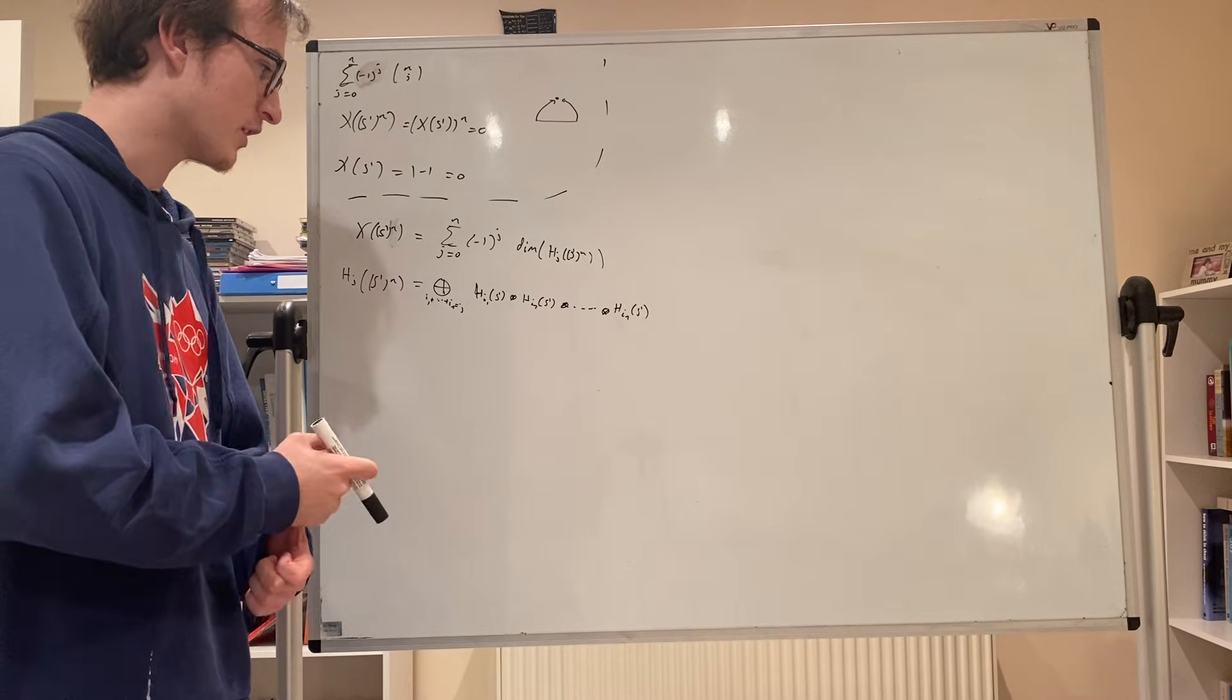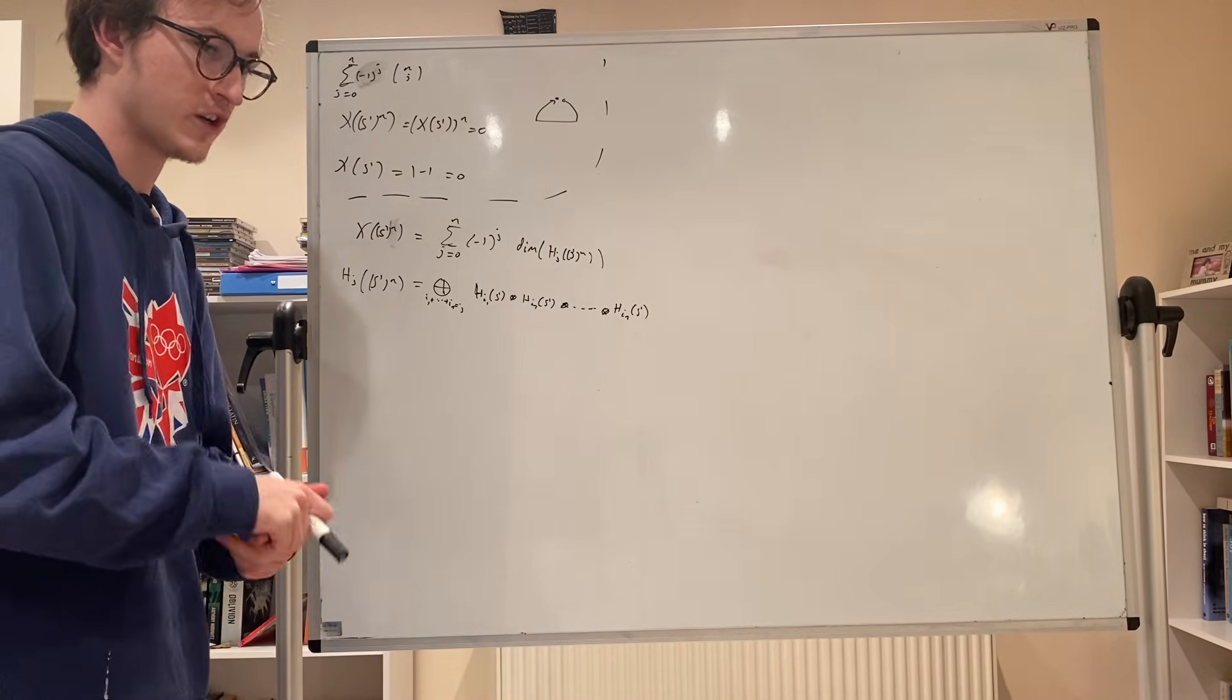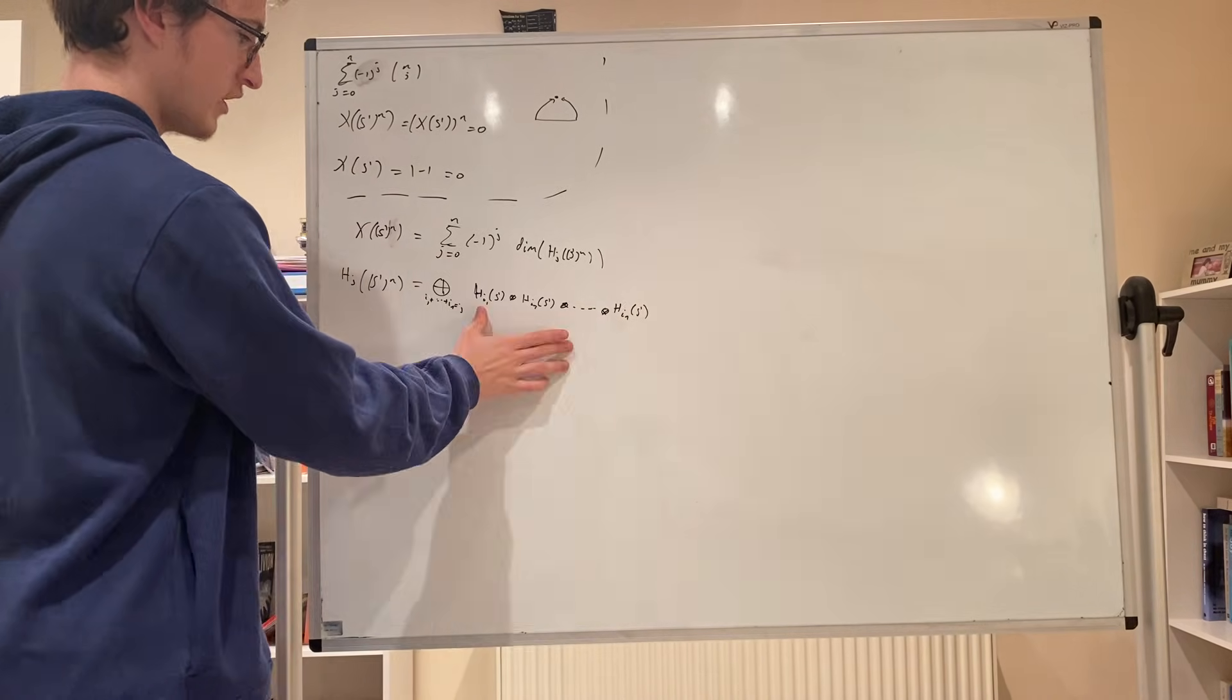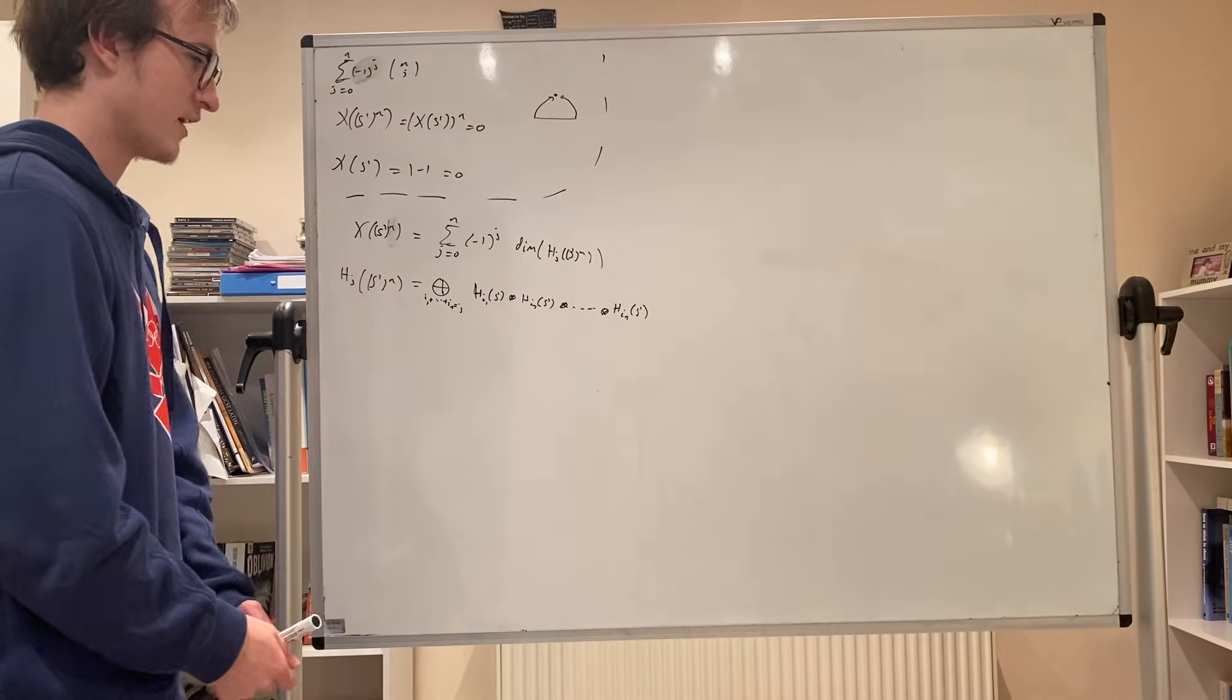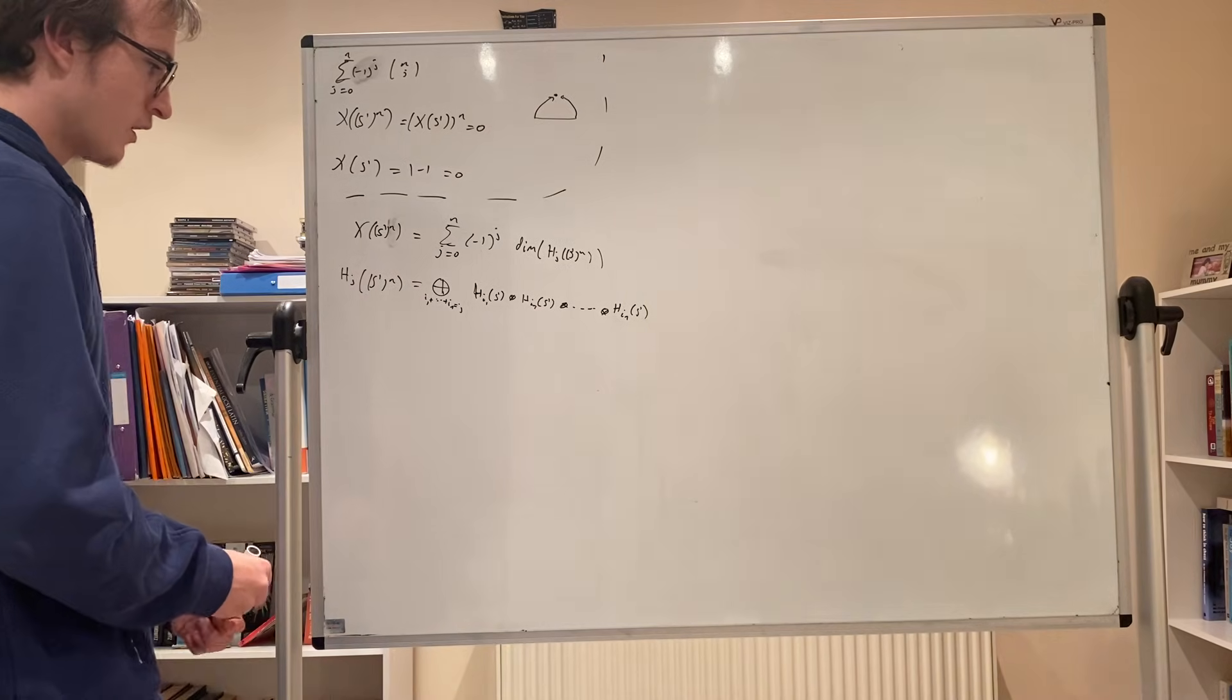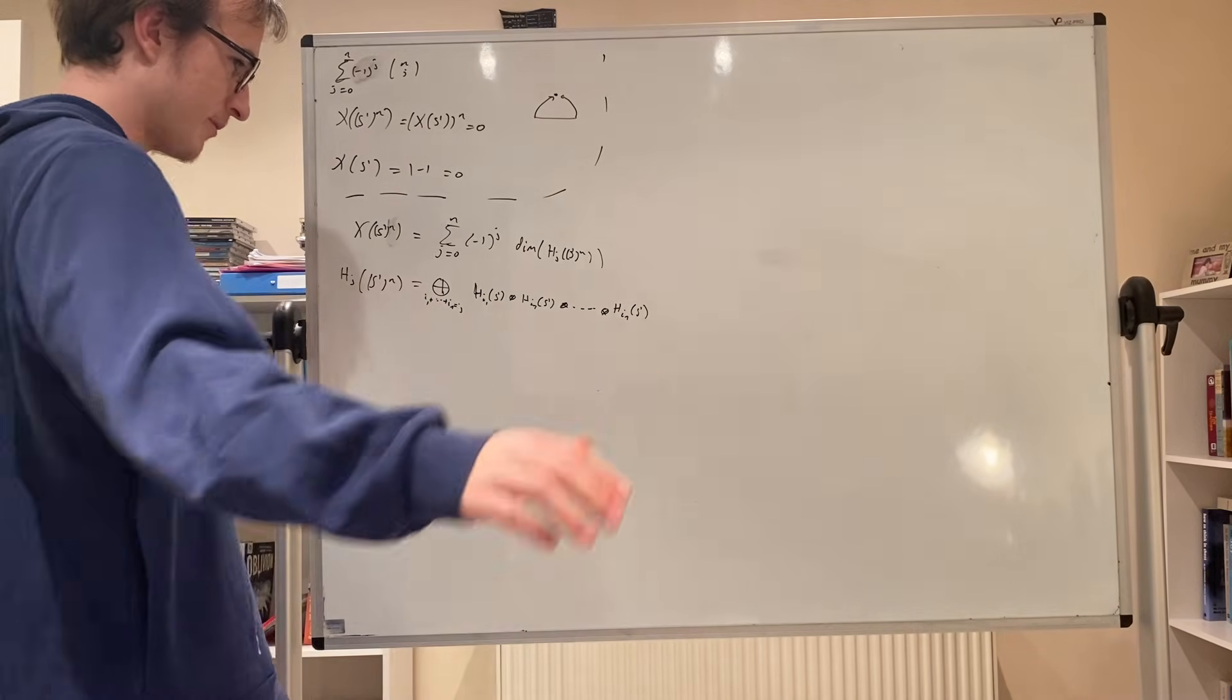For this tensor product to be non-zero we need all of these indices to just be either 1 or 0. And then we use the fact that the integers tensored with itself gives you just the integers. So when any of these indices is more than 1 we completely discard that.